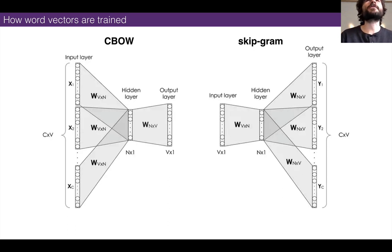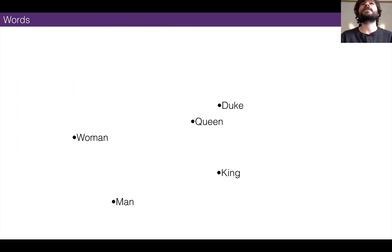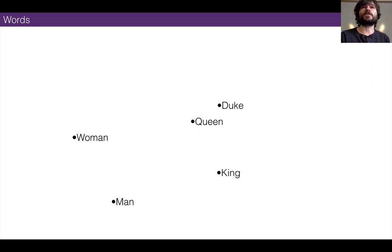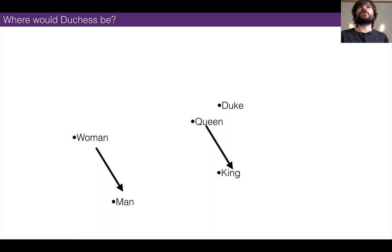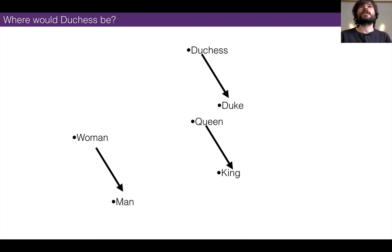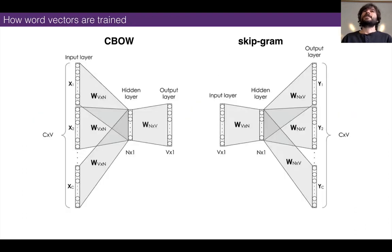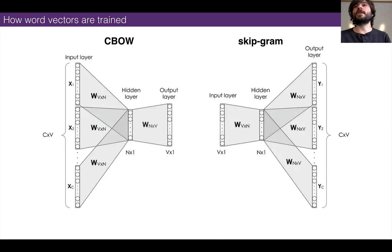Projecting words into space would look something like this: Queen, Duke, and King — terms of royalty — are relatively near each other. The vector between 'woman' and 'man' is the same as the vector between 'Queen' and 'King,' because there are relationship vectors manifested in the word vector space. A toss-up question: where would 'Duchess' be? If Duchess is the female version of Duke, it should have the same vector between it and Duke.